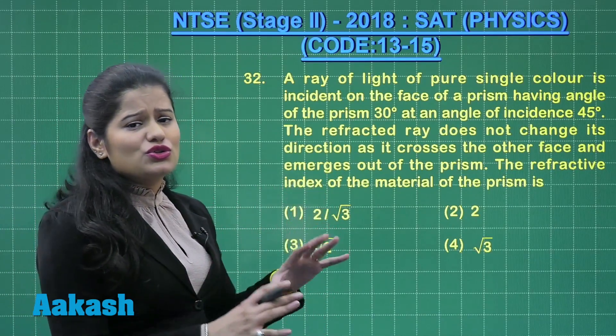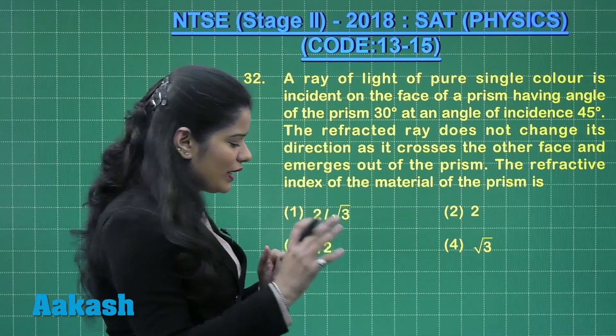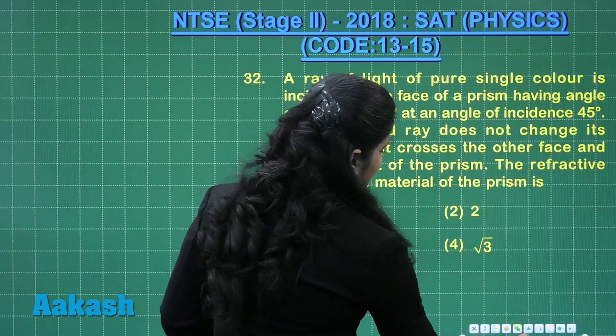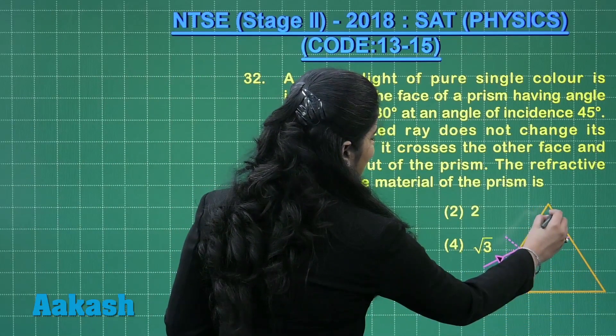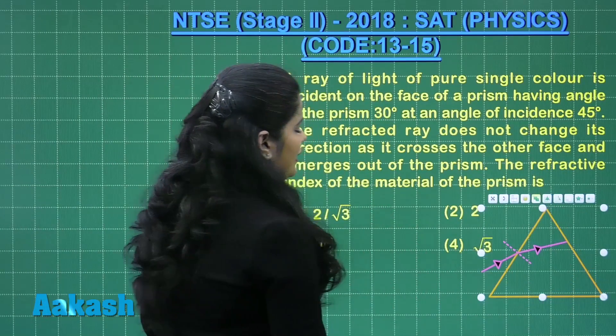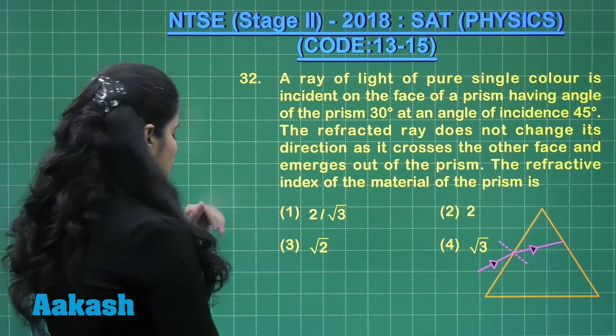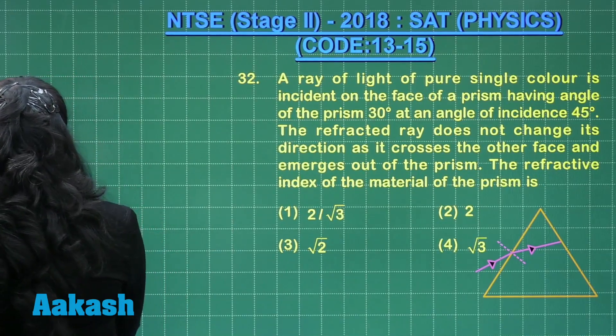Now just to make this question more clear to you, I will draw the diagram here. Have a look at this figure. Here in this figure you can see that there is a prism and what is the angle of the prism that is given to us in the question.